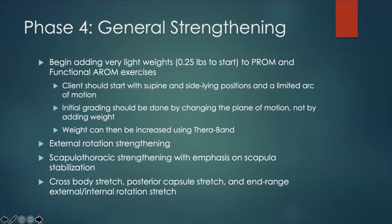From here, specific actions to strengthen include external rotation, scapulothoracic strengthening to increase scapula stabilization for better rotator cuff performance, and finally cross-body, posterior capsule, and end-range external and internal rotation stretching. This is the limited arc of motion in supine with weight that begins in stage four.